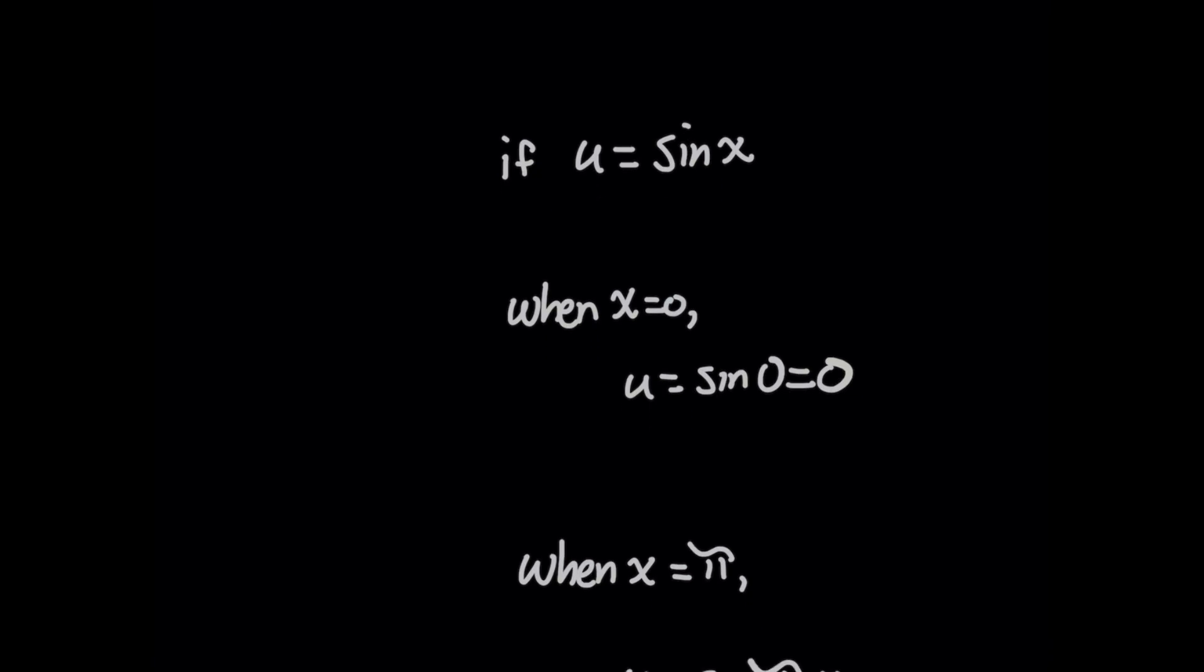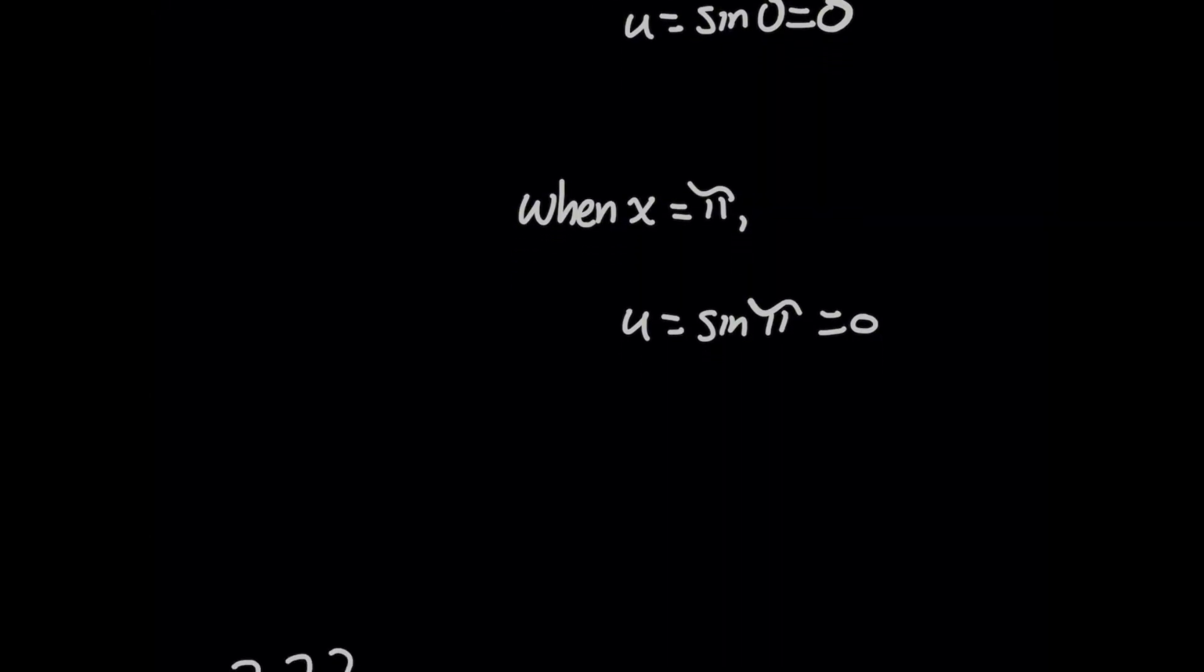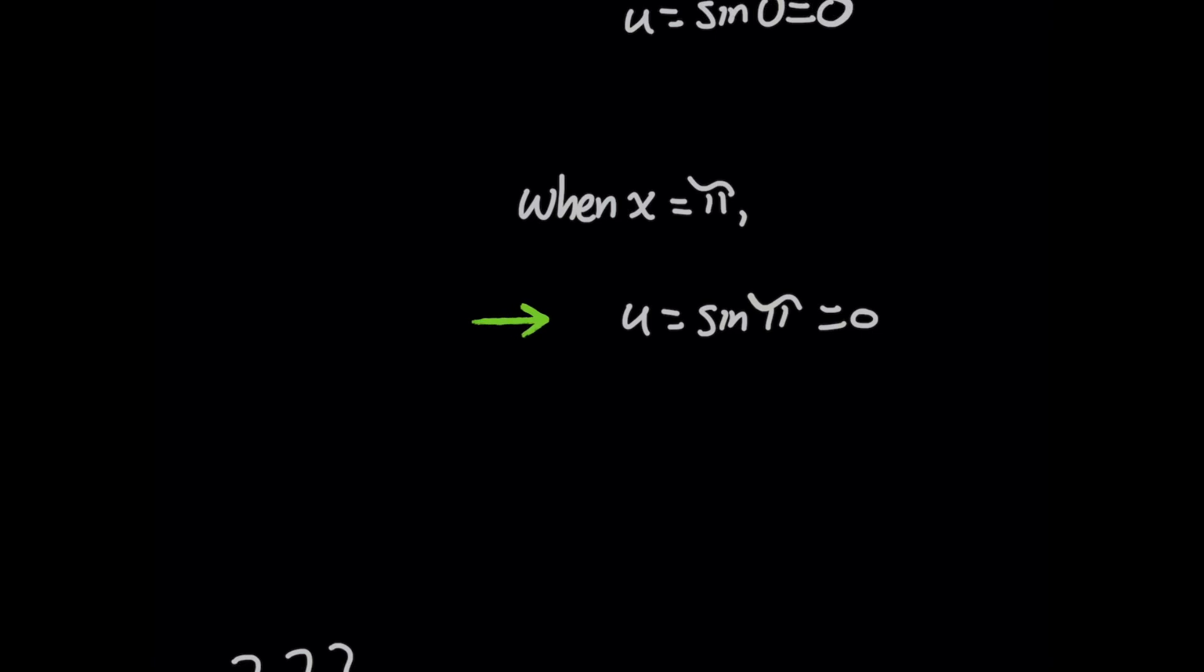Now, when you repeat this for the upper limit of integration, x equals pi, we're going to get that u equals sine of pi. Huh, which is also 0. Imagine that. Well, that's kind of a tricky problem.